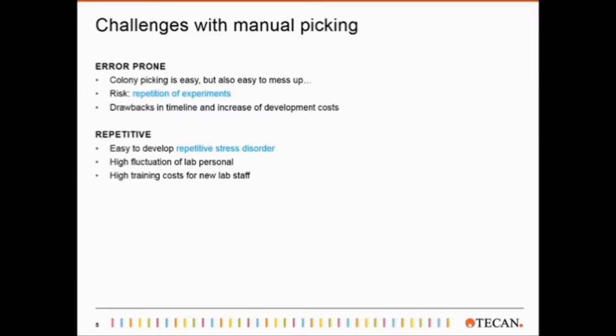Secondly, it is a very repetitive task. If manual colony picking is done in a high throughput manner, it becomes very likely that people become bored out and leave the job, increasing the fluctuation of lab personnel and making training of new people more frequent and adding to the training costs. And of course, picking is just time consuming. We had a group at the institute I once worked for doing big library screens, and for the picking days, they would actually go around and ask people if they could help them. Sometimes this would work, but sometimes they couldn't process all they would like to. So picking can create a real bottleneck in the workflow.